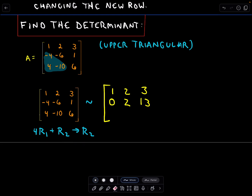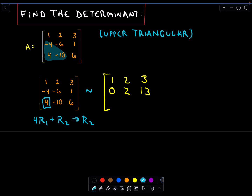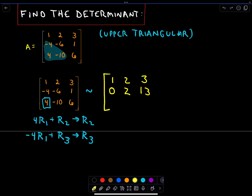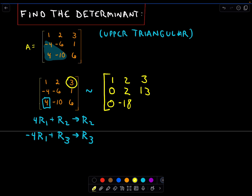Let's do two things at once. I've got that element to be zero — that's good. Now I need to make that positive four in the lower left corner into a zero. To do that, I'm going to take negative four times the first row and add that to the third row to get my new third row. Negative four times one is negative four; negative four plus four gives me zero — that's what we want. Negative four times two is negative eight; negative eight plus negative ten is negative 18. And negative four times three is negative 12; negative 12 plus six is negative six. So we're getting closer.